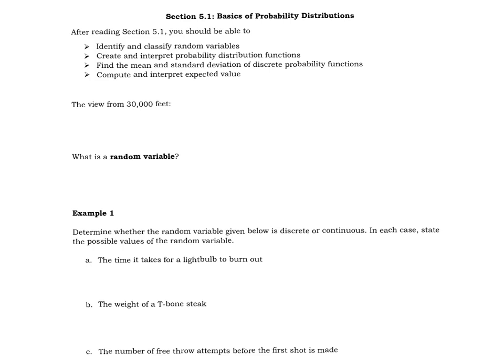All right, in chapter 5, we are going to start looking at probability distributions. Over the next couple of chapters, we will look at probability distributions, both for discrete variables and for continuous variables. And in chapter 5, we're going to focus on the discrete variables, again, those ones that are countable.